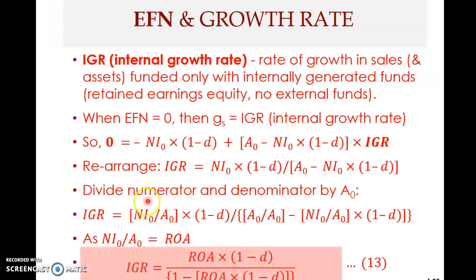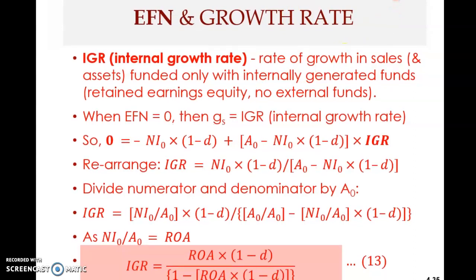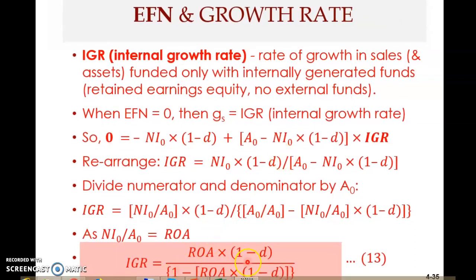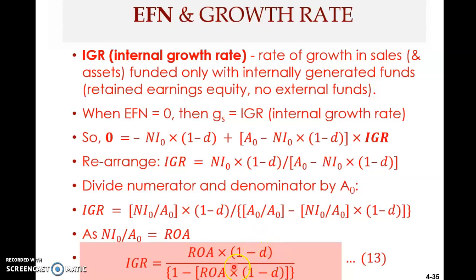Net income over assets is ROA. So after simplification, the formula becomes: ROA multiplied by (1 minus d), all divided by 1 minus ROA multiplied by (1 minus d). Here d is the dividend payout ratio.